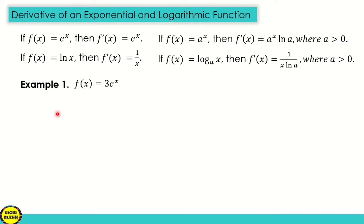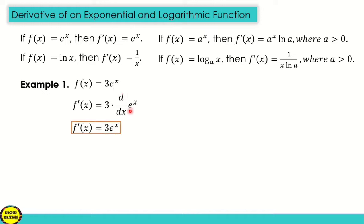For example, number 1: find the derivative of f of x is equal to 3 times e raised to x. Our exponential here is e raised to x, and the derivative of e raised to x is also e raised to x. So f prime of x is equal to 3 times the derivative of e raised to x, which is e raised to x. So the answer is 3 times e raised to x.